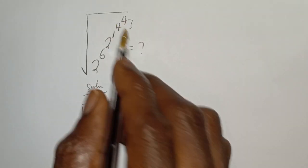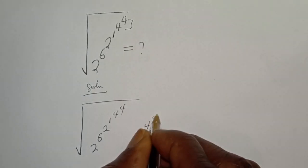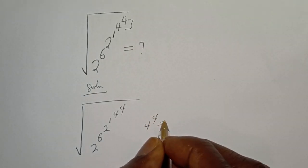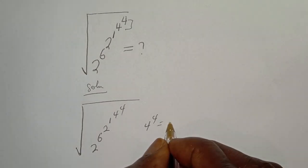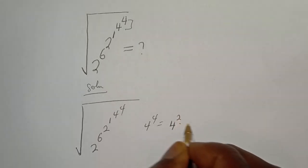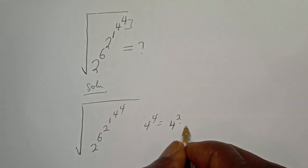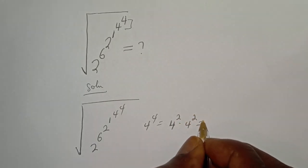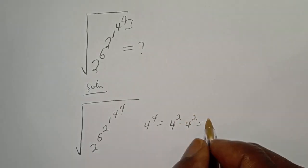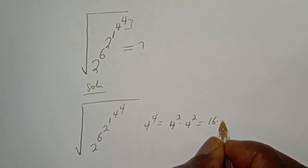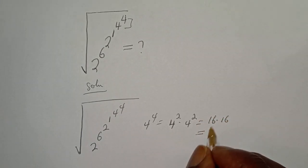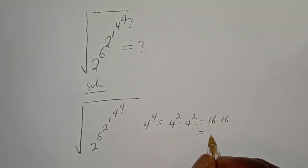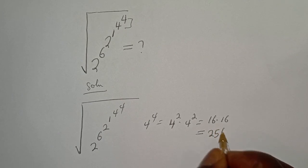Now let's start with the first step. 4 raised to power 4 is equal to 4 squared multiplied by 4 squared. This is equal to 16 multiplied by 16, which is equal to 256.